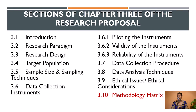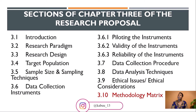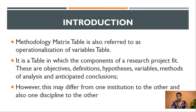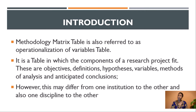We started by looking at the sections of Chapter 3 of the Research Proposal, and we said Chapter 3 has got 10 subsections. So far, we have discussed 9 subsections, and therefore today is our last lesson discussing Chapter 3 of the Research Proposal. When we talk about the Methodology Matrix Table, it is also referred to as the Operationalization of Variables Table.